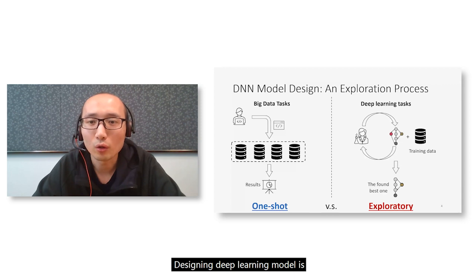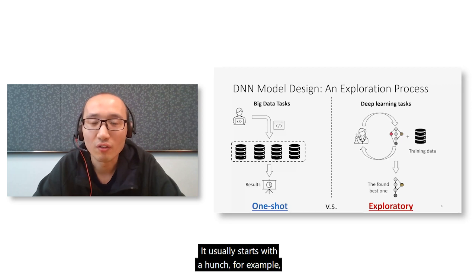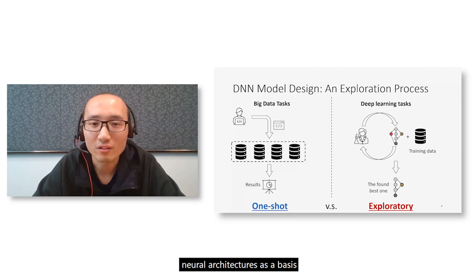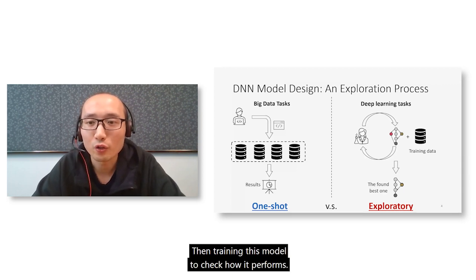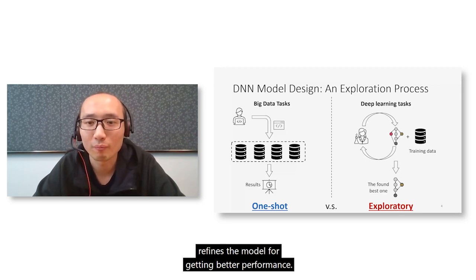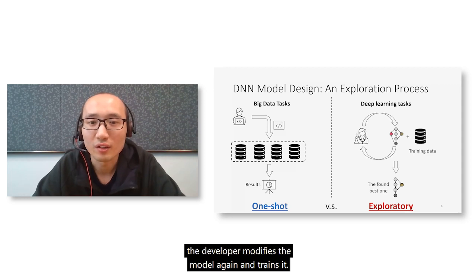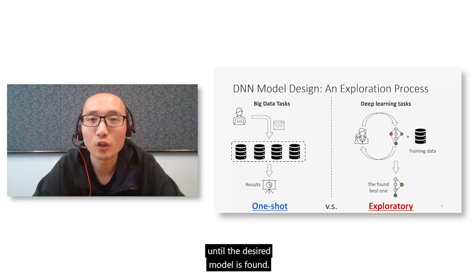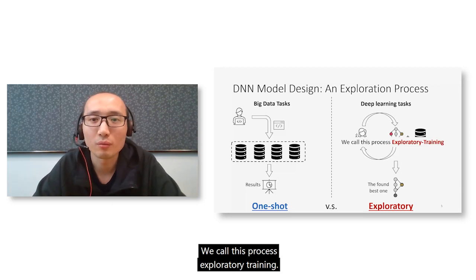Designing a deep learning model is mainly an exploratory process. It usually starts with a hunch, for example from some well-known, good-performing neural architectures as a basis to produce a concrete model. Then training this model to check how it performs. Based on the training performance, the developer manually or automatically refines the model. This process is repeated until the desired model is found. We call this process exploratory training.